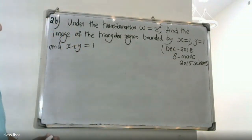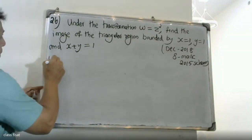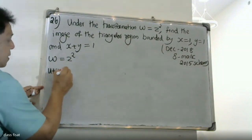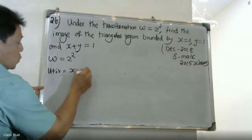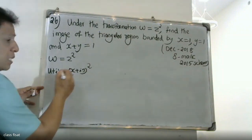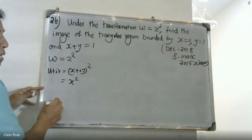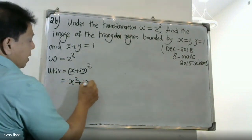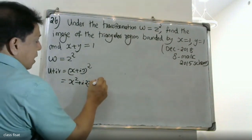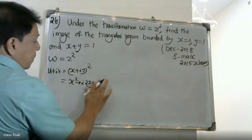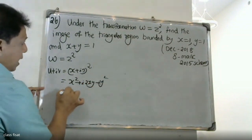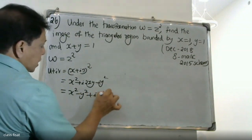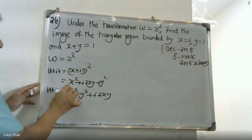We write the problem with w equal to z squared. So u plus iv equals x plus iy, all squared. Expanding: x plus iy squared gives x squared plus i into 2xy plus i squared y squared, which equals x squared minus y squared plus i into 2xy.